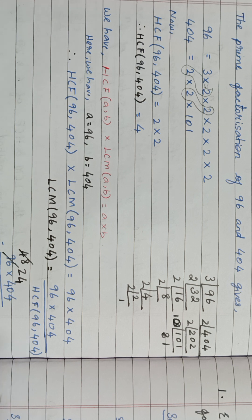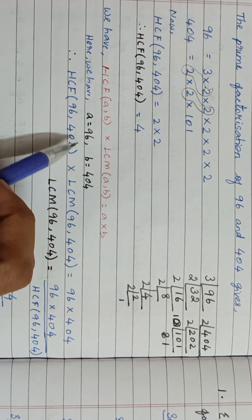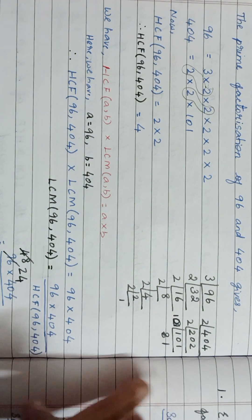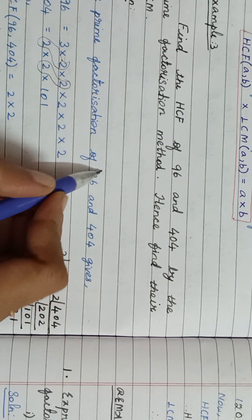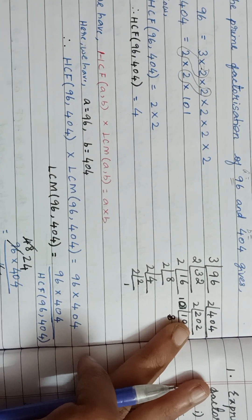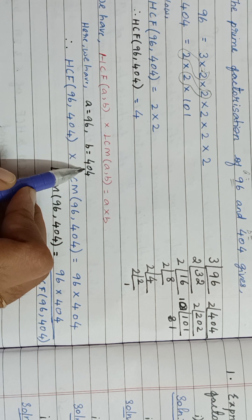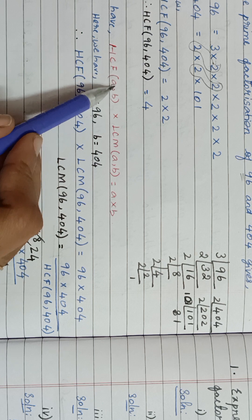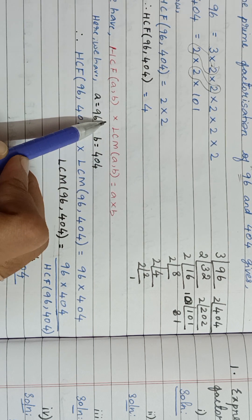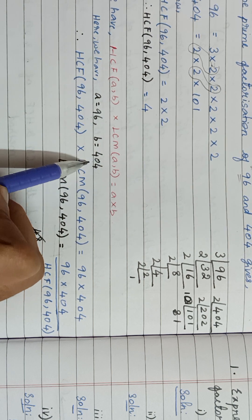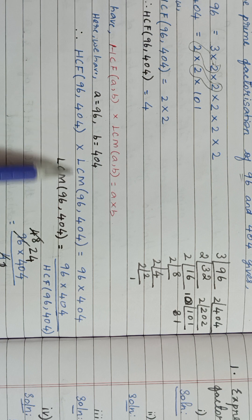So here A and B are the two numbers. In this problem we have A = 96 and B = 404. Now applying A and B values into this formula: in the place of A you are putting 96, and in the place of B you are putting 404, so you will get this value.